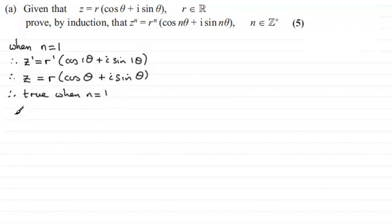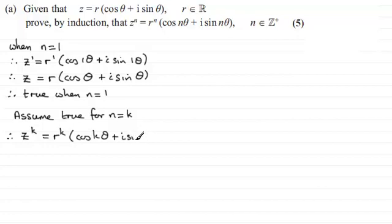So we now assume that this is true for N equaling a particular integer, let's say k. And so on that basis, we've got that Z to the power k, using what we've got here, Z to the power k must be equal to R to the power k multiplied with cos of k theta plus I sine of k theta.